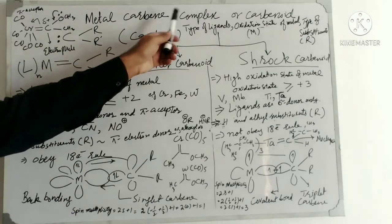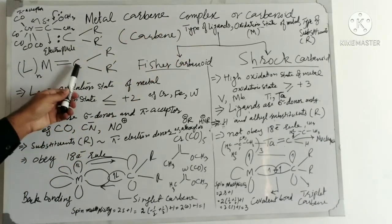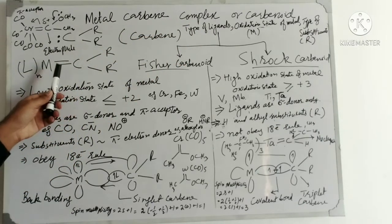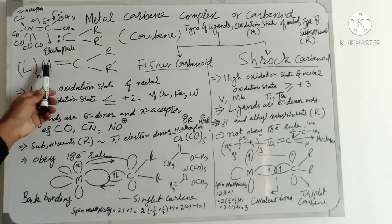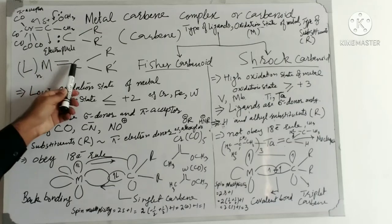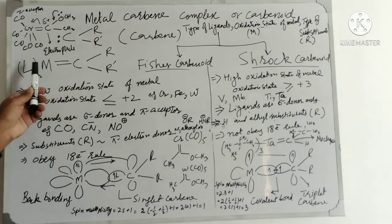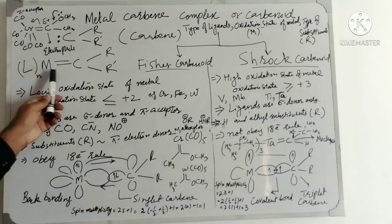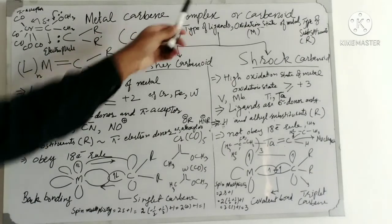In the metal carbene complex or carbenoid, when this carbene forms a metal bond — any metal which forms a bond with the carbene leaving these two valence electrons — we call it a metal carbene complex or carbenoid.